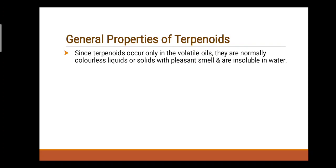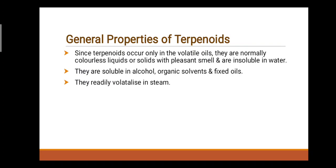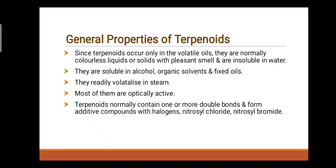Next point: General Properties of Terpenoids. Since terpenoids occur only in the volatile oils, they are normally colorless liquids or solids with a pleasant smell and are insoluble in water. They are soluble in alcohol, organic solvents, and fixed oils. They readily volatilize in steam. Most of them are optically active. Terpenoids normally contain one or more double bonds and form additive compounds with halogens, nitrosyl chloride, and nitrosyl bromide. They get oxidized by oxidizing agents.